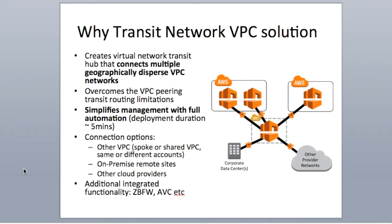For folks who may not be familiar, Cisco CSR1KV is an enterprise class virtual router appliance, available in private and public cloud. It runs on IOS XE, sharing the same code base with other Cisco edge routers such as ASR and ISR4K. In this Transit Network VPC solution, CSR1KV is used as a hub router to provide routing and VPN services. In addition, customers may optionally enable other services such as zone-based firewall and application visibility control AVC that control and monitor application traffic.